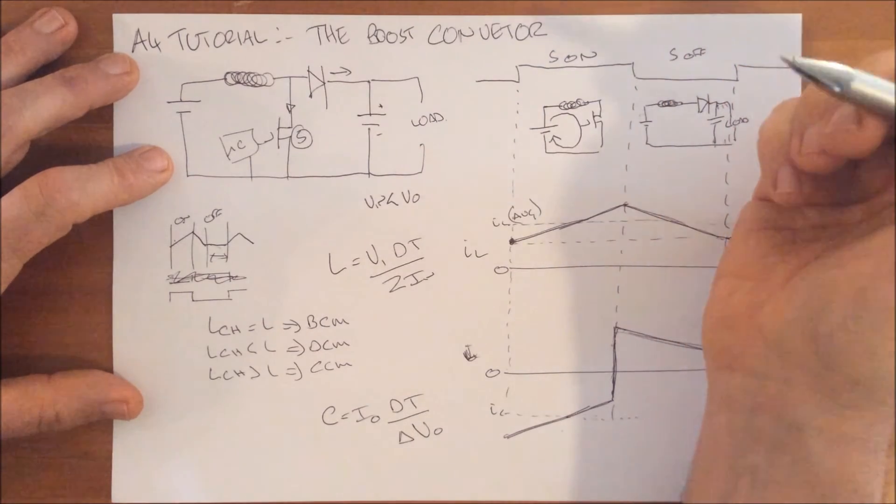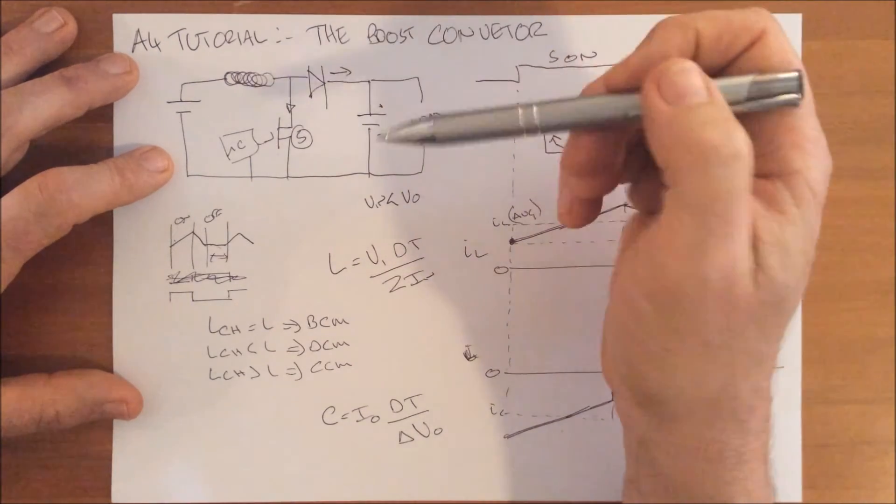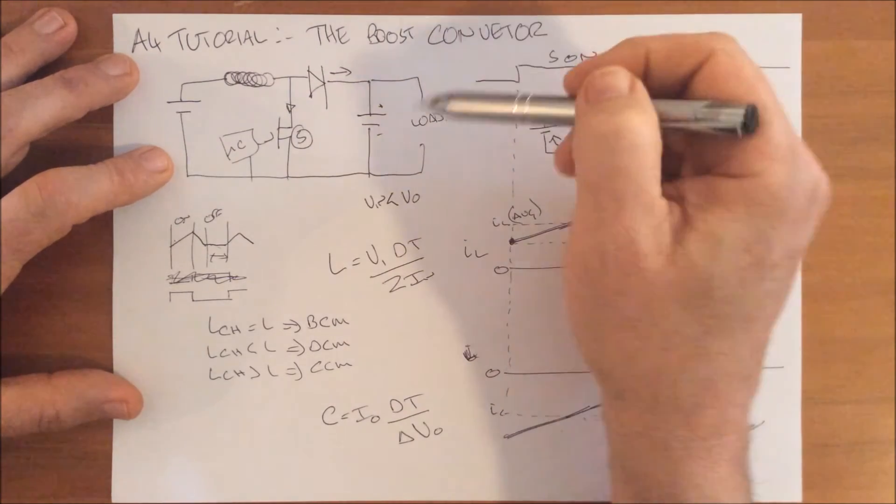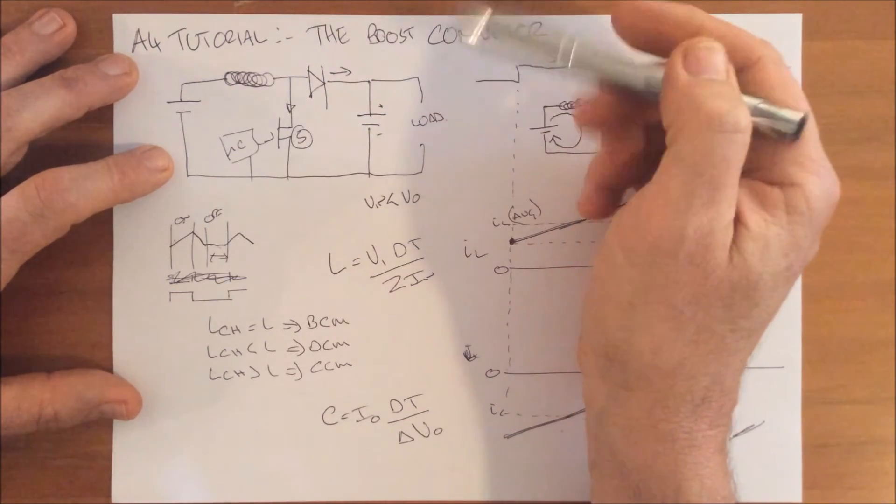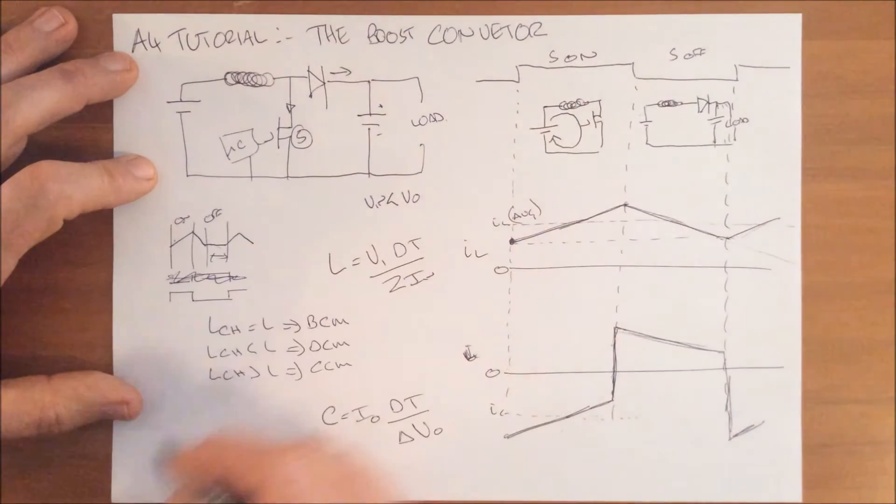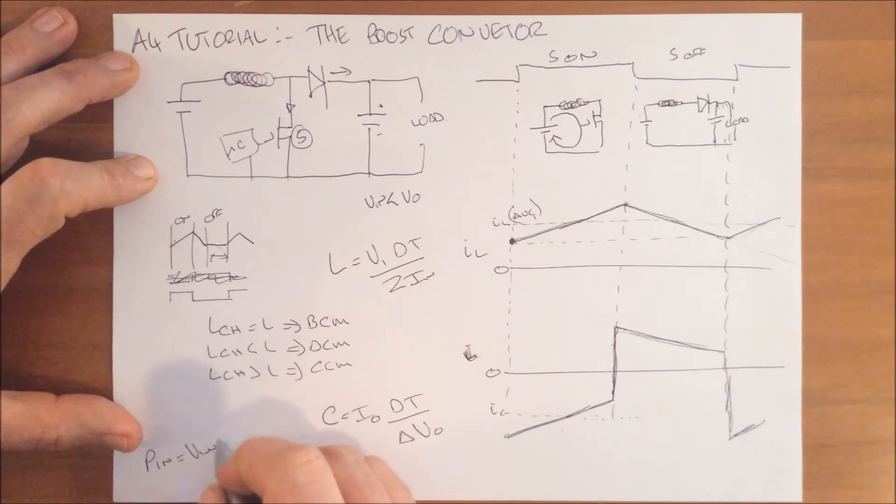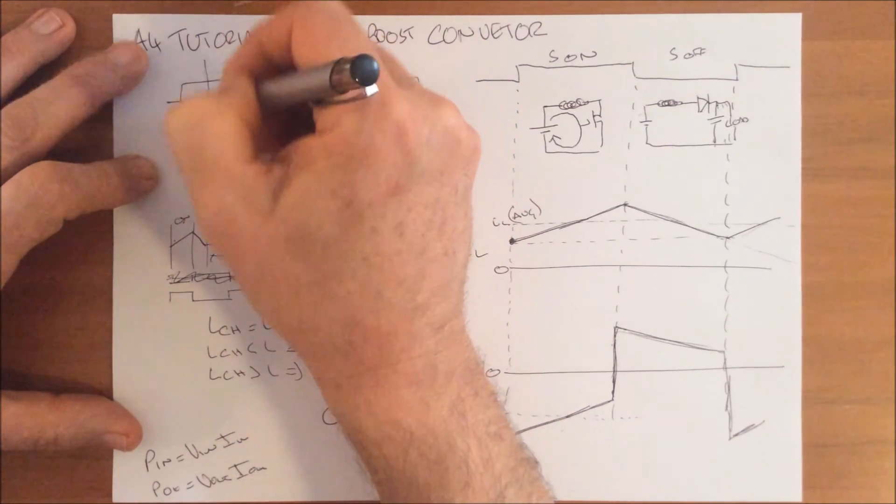The boost converter does not create energy. Just because you've got an output voltage that is bigger than your input voltage doesn't mean you get free electricity. You're still bounded by the basic laws of physics. You're going to have power input to this device, which is VIN times IIN. You're going to have output power, which will be your output voltage times your output current. So if we double the output voltage, the current we can draw out is going to be much less.